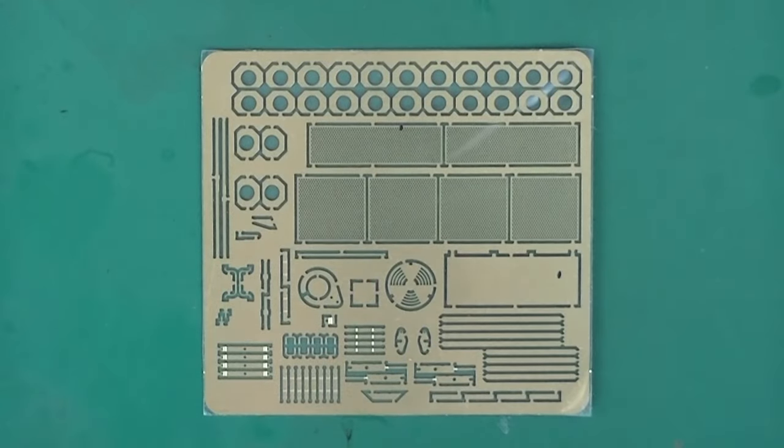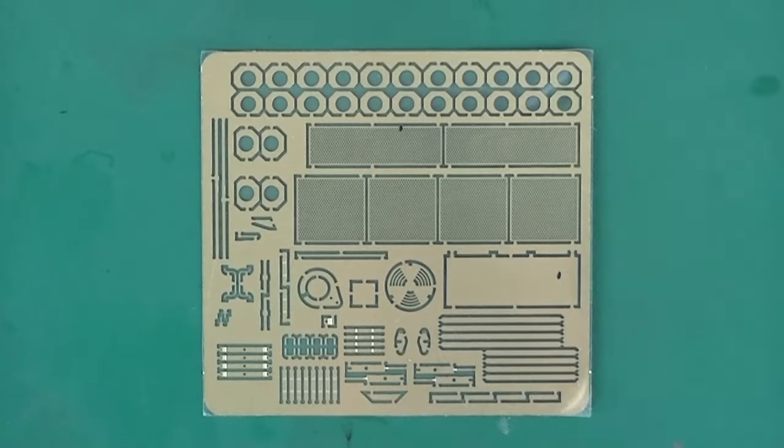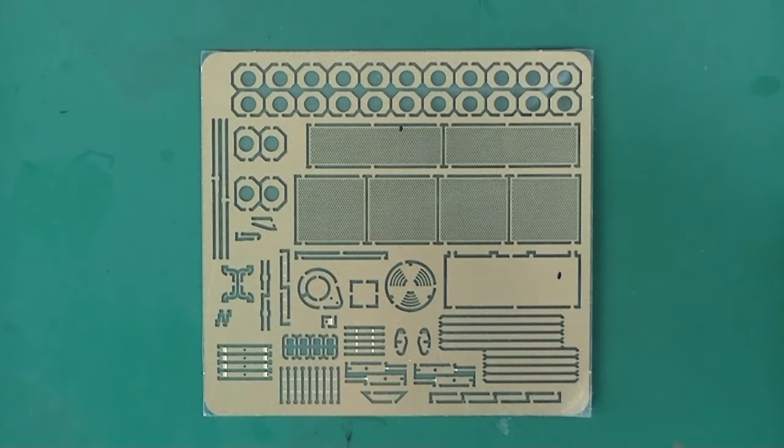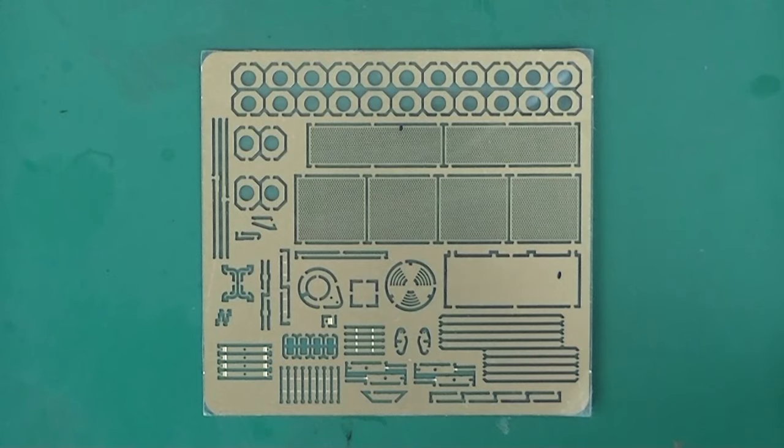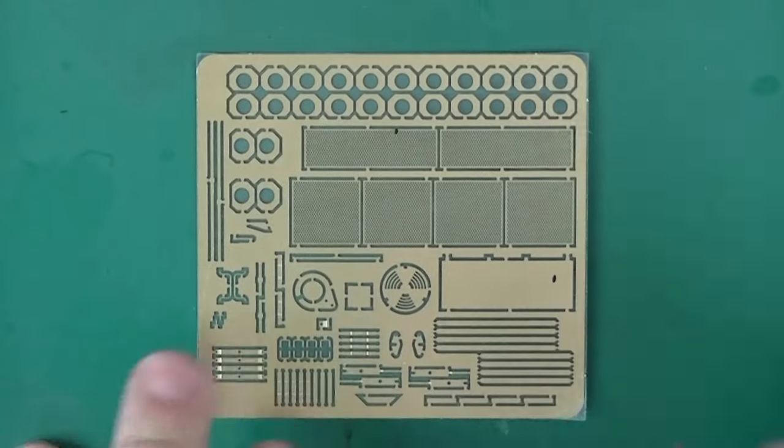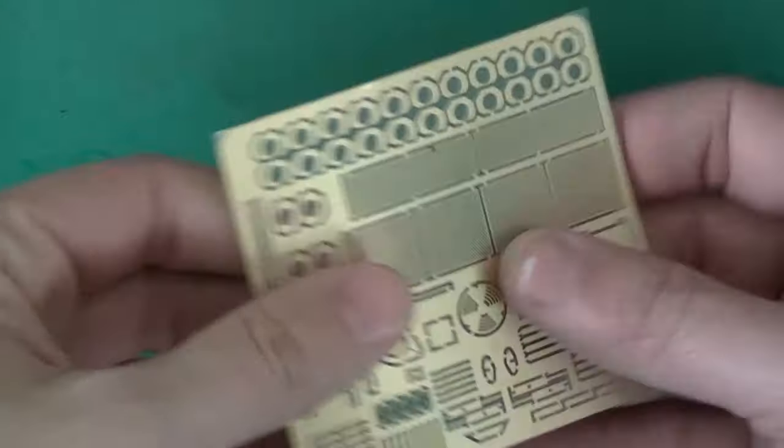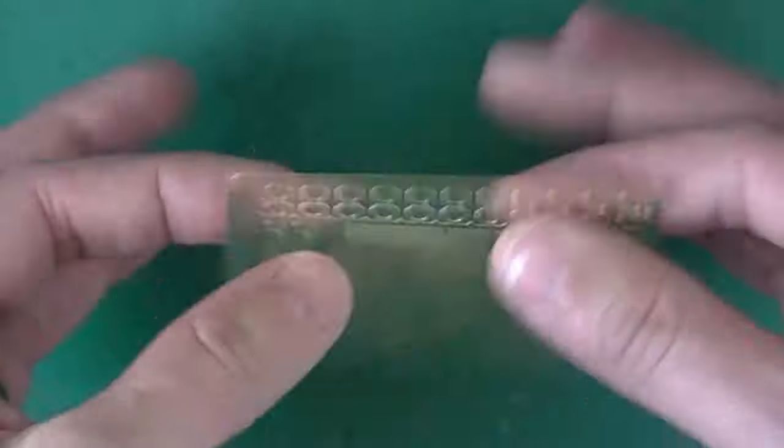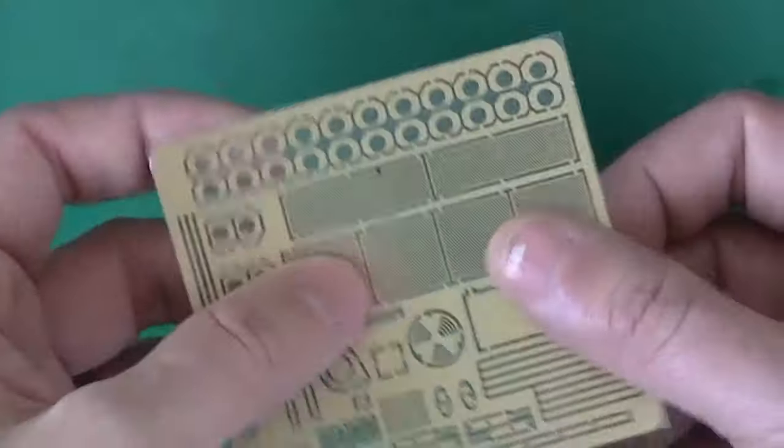Moving on to our non-plastic parts. This is the photo etched sheet. Not that big for a kit of this size. Photo grills, a couple of clasps I think, and then these things that you were stacking up on the interior. It seems to be of a good thickness. You know, soft enough to work with but not too soft.